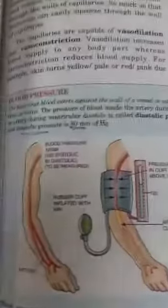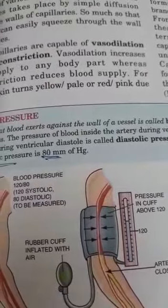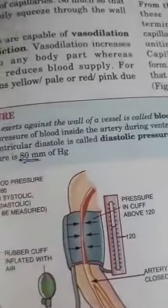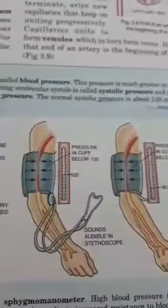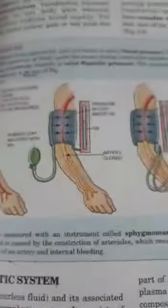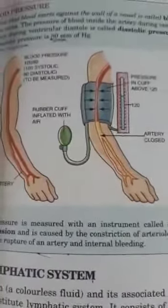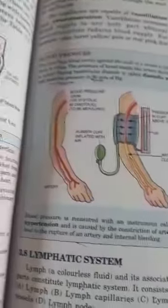Capillaries are simply the connections linking arteries to veins — they are small branches of arteries that connect to veins. Capillaries are very thin-walled, which allows diffusion to occur easily across their walls. Diffusion means the movement of materials across the walls of these blood vessels.